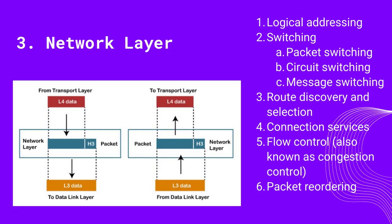The third layer of the OSI stack is the network layer. The network layer takes care of logical addressing, the switching mechanism to use, discovering and selecting the best route, establishing the connection to the other device, controlling congestion by speeding or slowing the speed of data given to layer 2, and reordering of the packets received at the receiver's end.